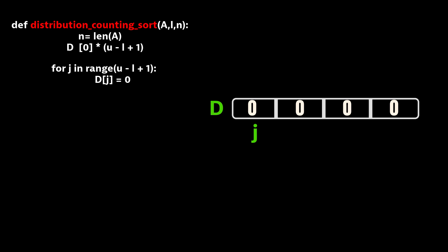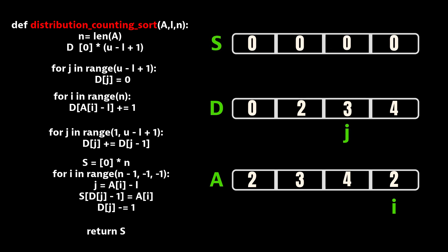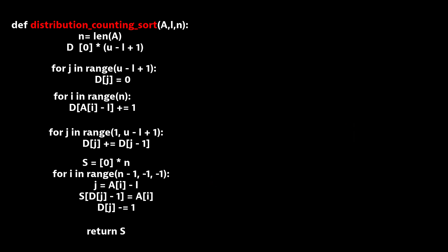In the first for loop, we initialize the frequencies. In the second for loop, we compute the frequencies. In the third for loop, we use the distribution array, and in the last for loop, we sort the array. The explanation was covered in detail with the previous example.